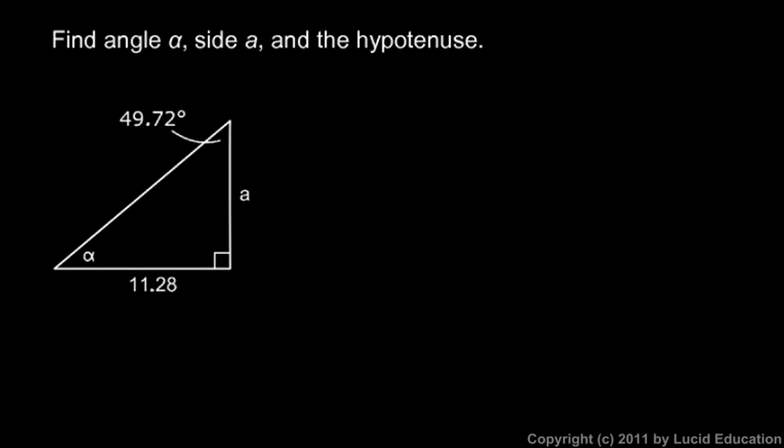Here we're given a diagram and we're told to find angle alpha, side a, and the hypotenuse. We're given this angle, that's 49.72 degrees, and we know the 90 degree angle, and this side is 11.28. So what can we find?